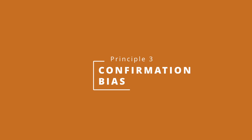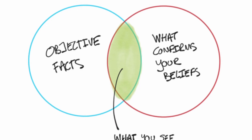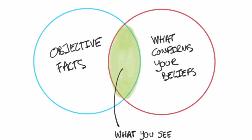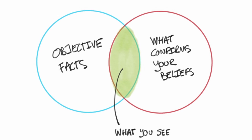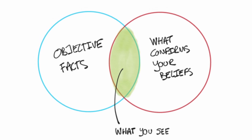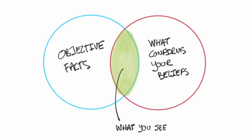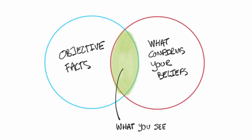Principle number three is quite different from the first two — now we're talking about people's beliefs. We're going to be talking about confirmation bias. Confirmation bias is a very famous principle in behavioral science, and the simple idea is that people are more likely to seek information that agrees with their current point of view and disregard or underweight information that contradicts their current point of view. There have been many studies that have looked into this with some really interesting findings.